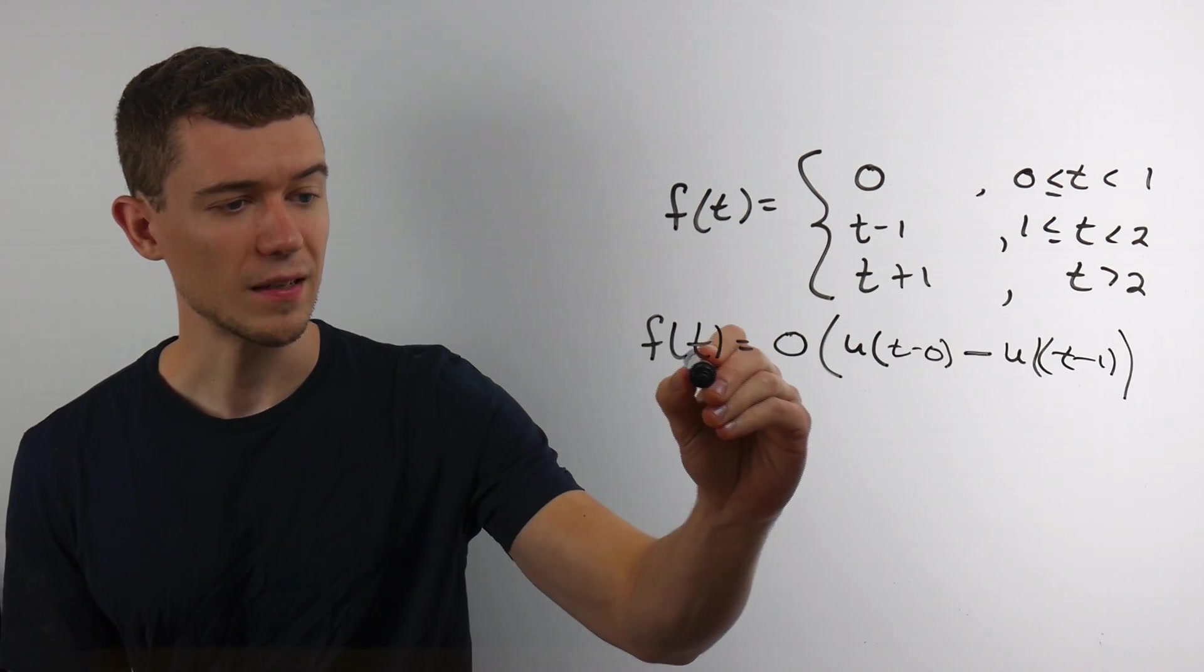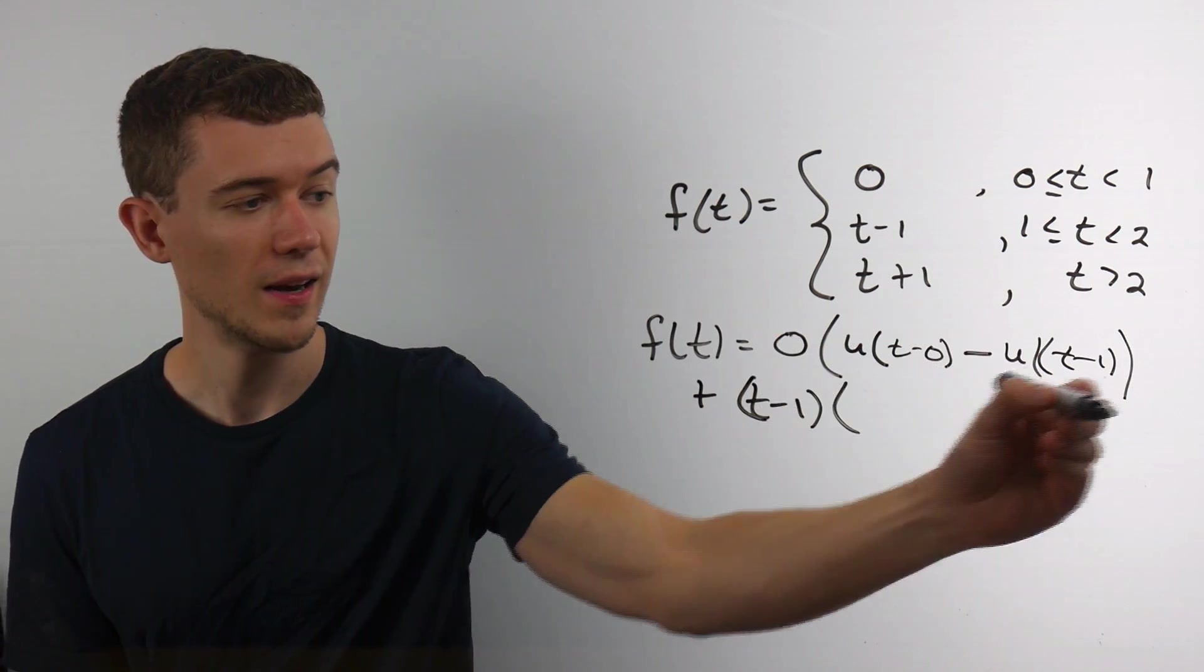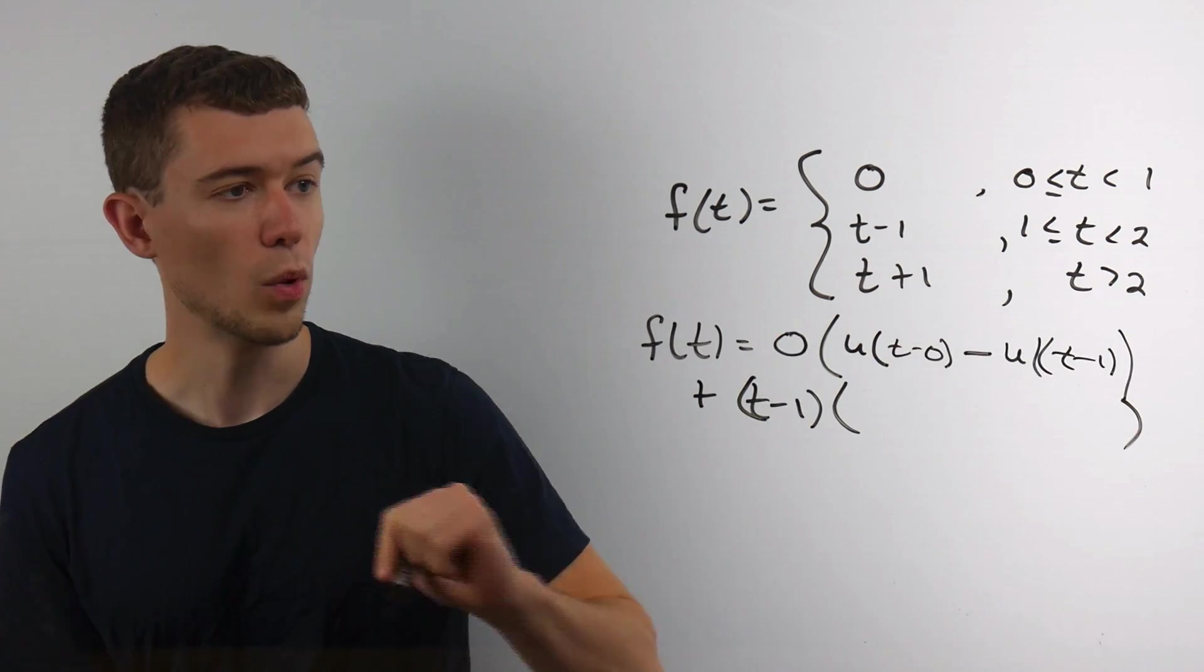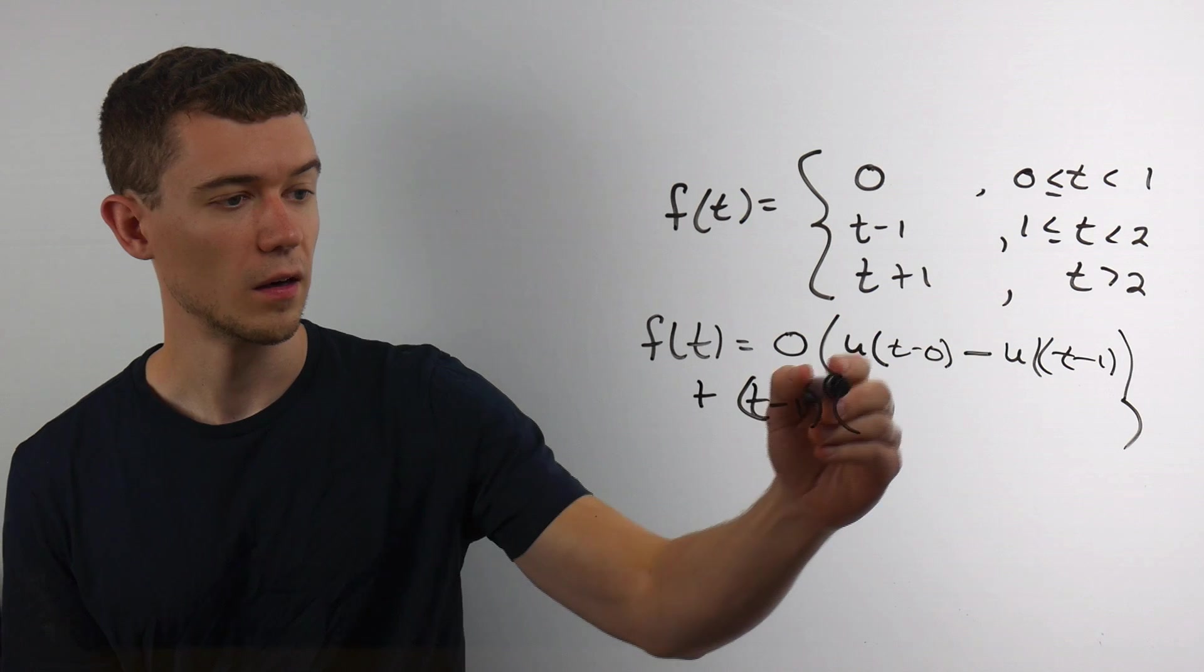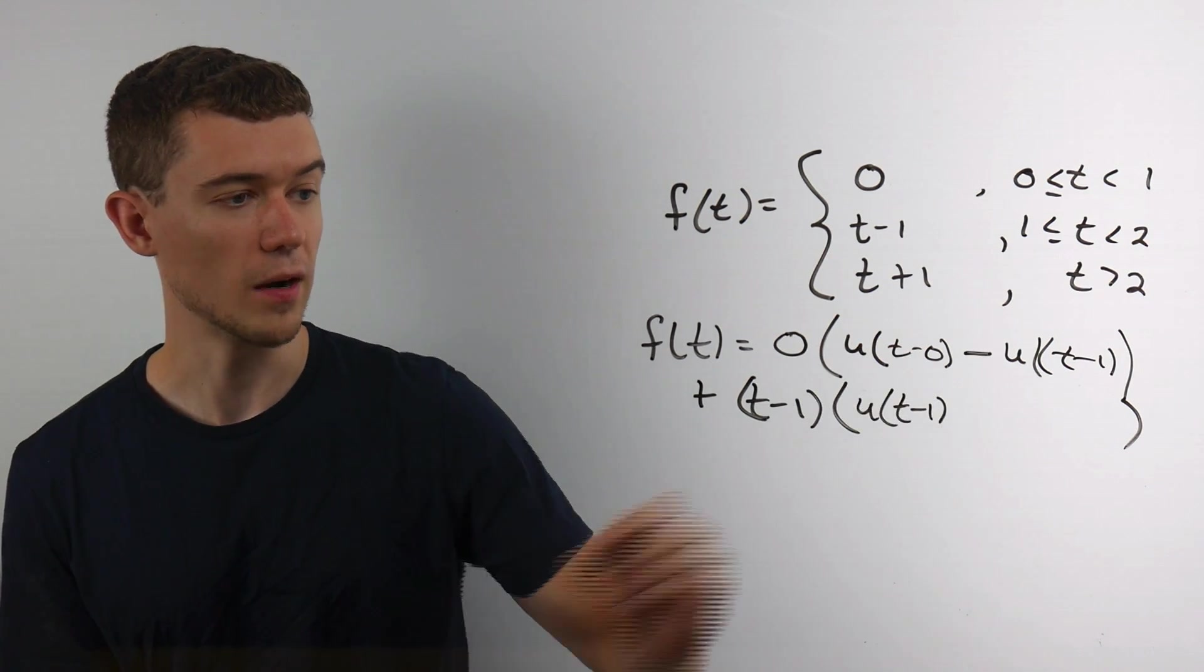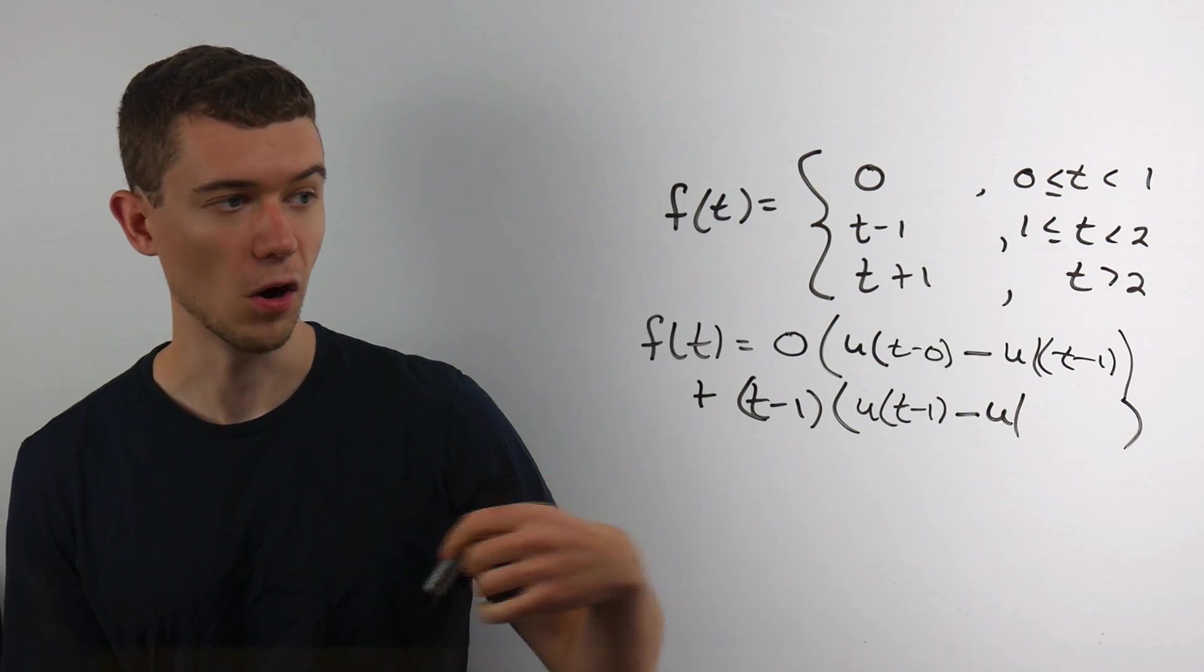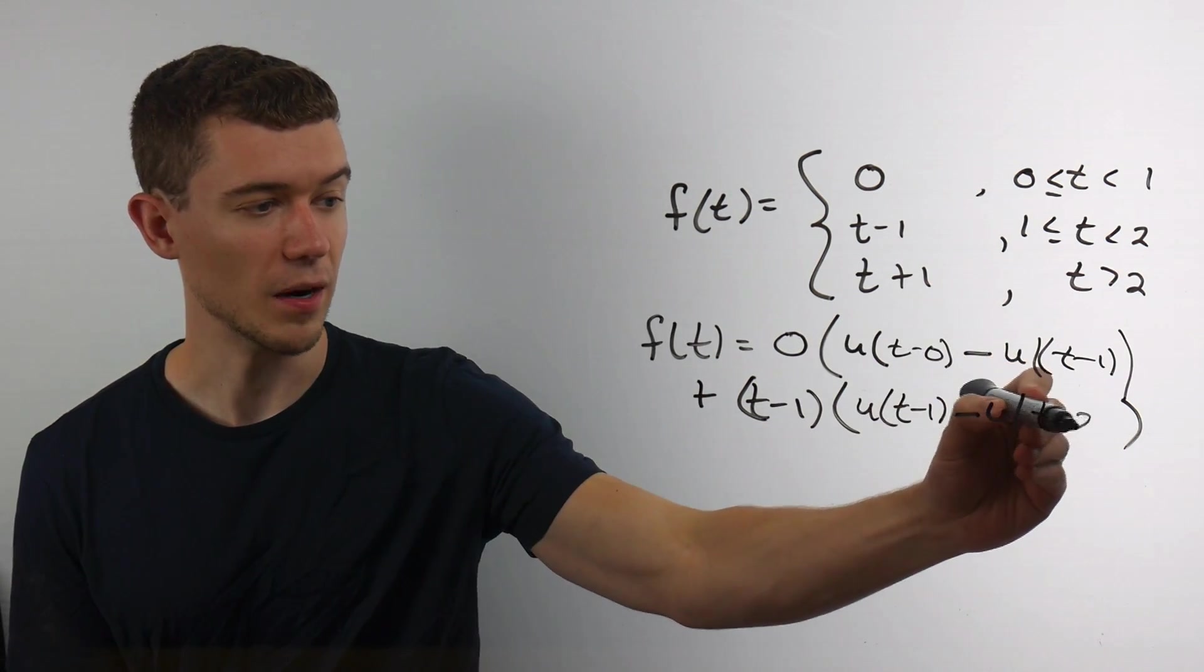How about this second piece? So I would have plus the second piece, t minus 1. And I do the same deal. Where does this second piece activate? Well, it activates at 1. So I put a u of t minus 1. And then I minus, to signify the function flipping off, at t minus 2.